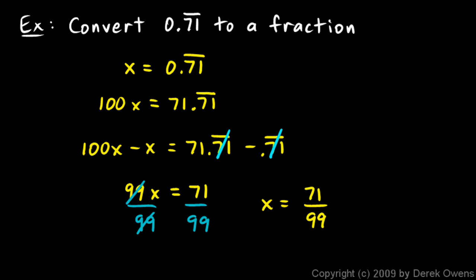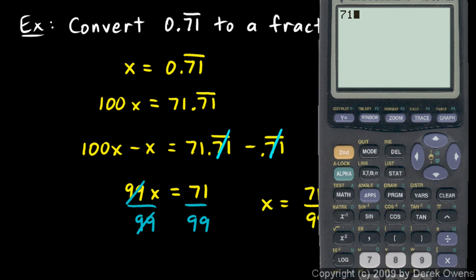We can actually check this pretty easily on the calculator. If I do 71 divided by 99, I should get 0.71 repeating. And there it is, 0.717171. It rounded at the end, but that's fine. But that's the repeating decimal, 0.7171, displayed as best the calculator can.